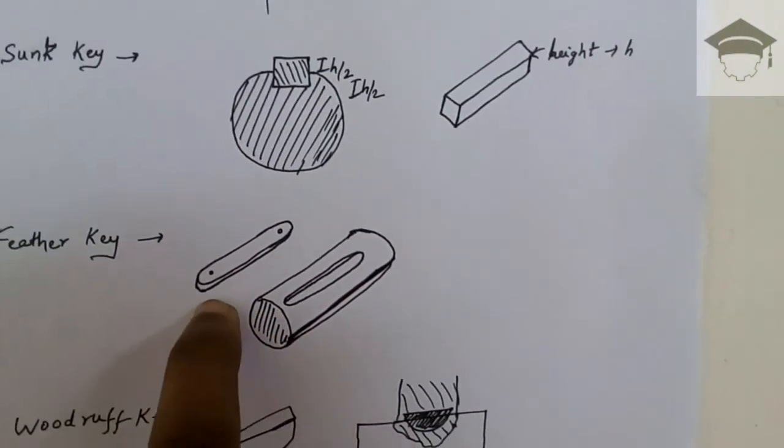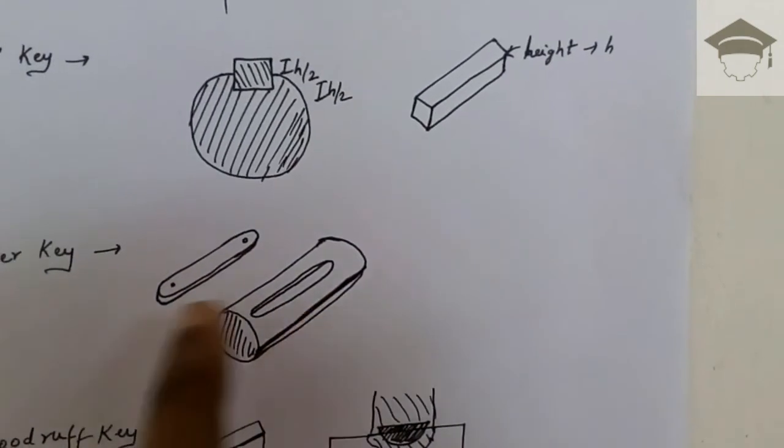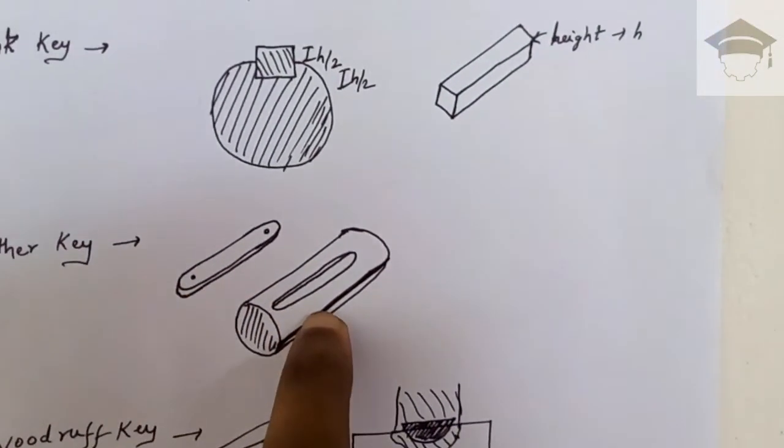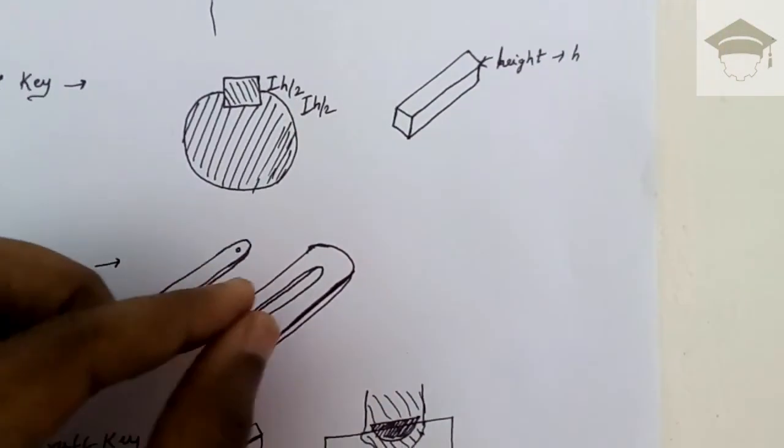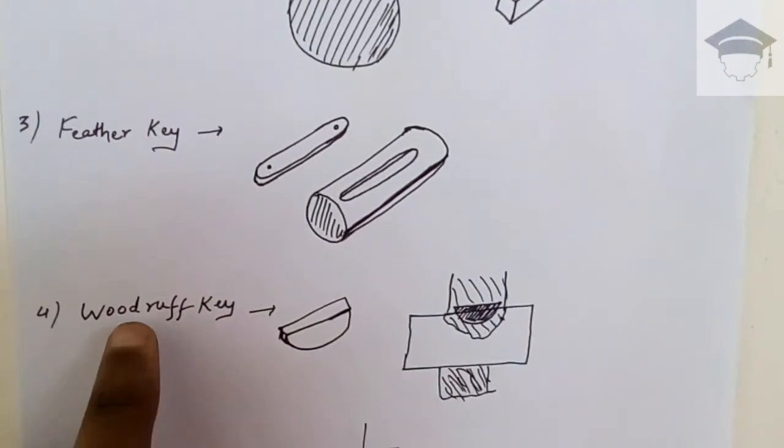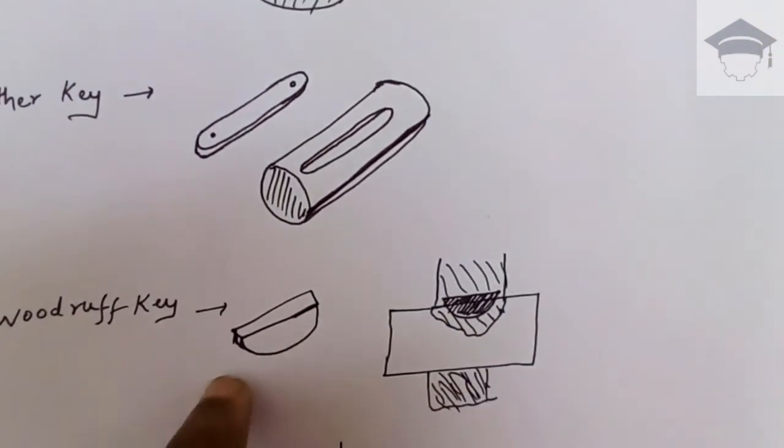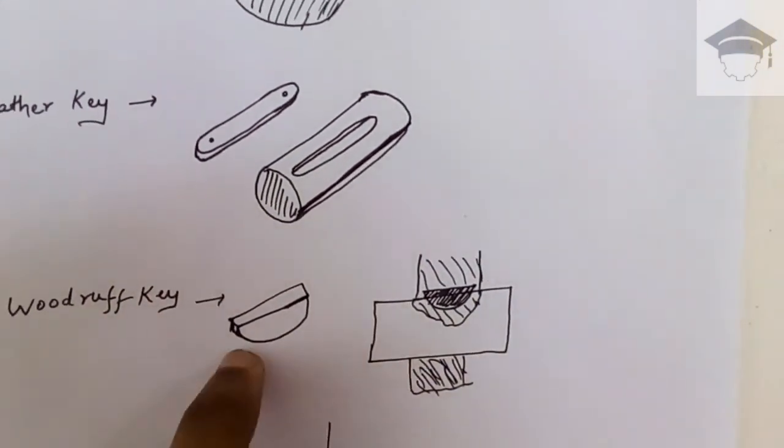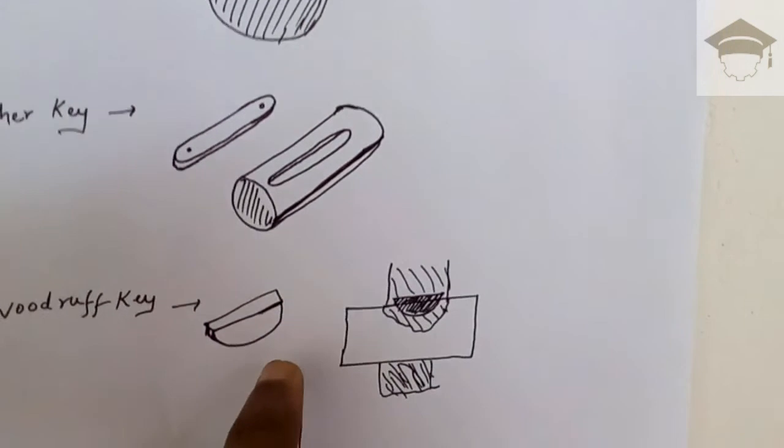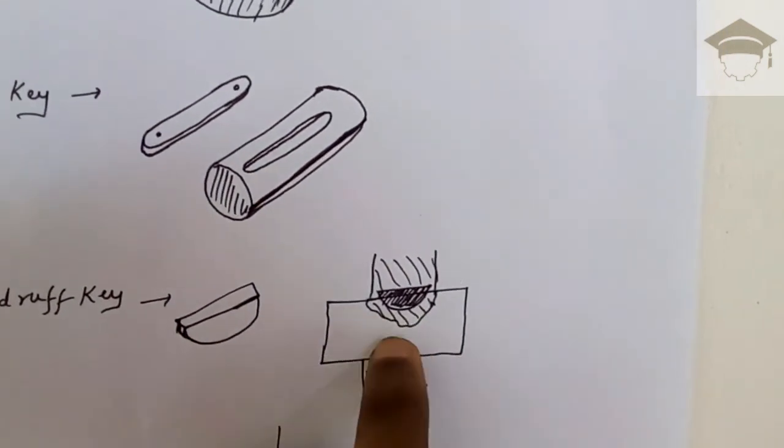Next comes the woodruff key. The woodruff key is of semi-spherical shape and is inserted between the shaft and the hub by force fit or interference fit. This has the maximum load carrying capacity or torque transfer capacity.